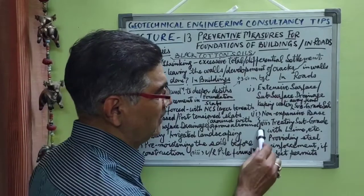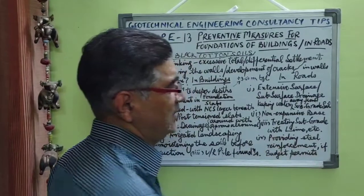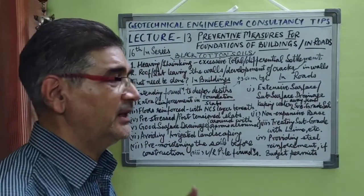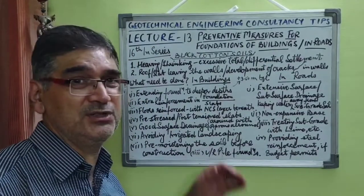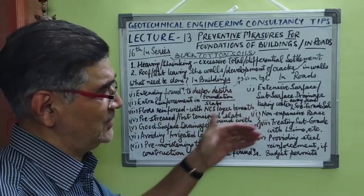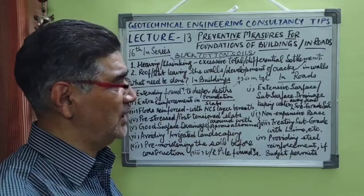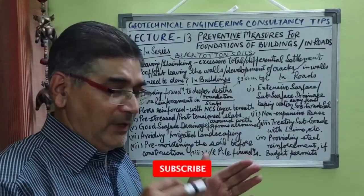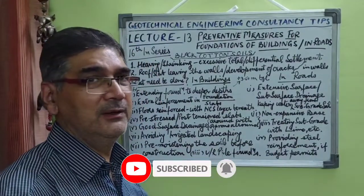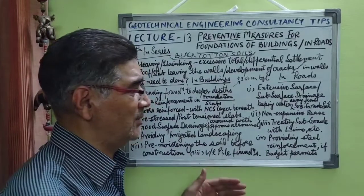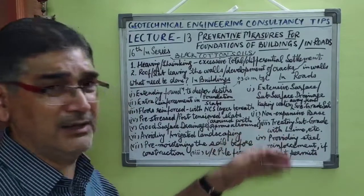The third method is to treat the subgrade soil with lime, because it has been found in many studies that lime stabilization is the best and cheapest solution for stability of such kinds of soils. Lime and these kinds of soils are well-suited, and there are other methods as well.